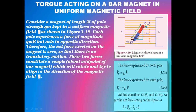Consider a bar magnet of length 2L, with pole strength Qm, kept in a uniform magnetic field. This is the important point — uniform magnetic field, B vector.